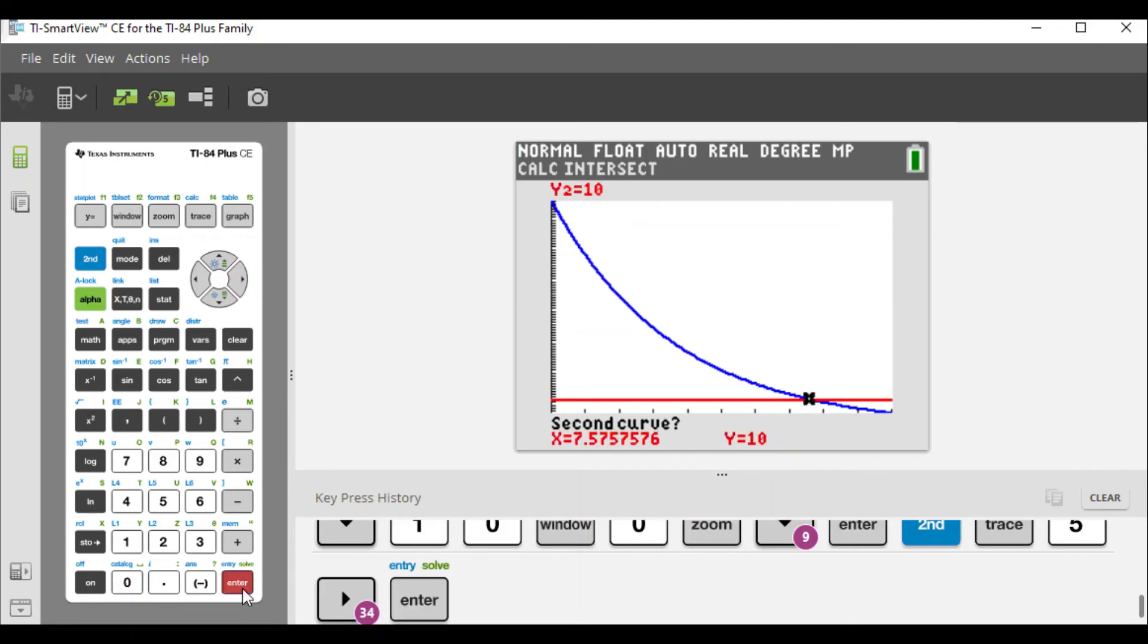Now we hit enter once, twice, one more time, and we see here the intersection is going to be 7.7549, which we round to the nearest hundredth to get 7.75. It looks like when x equals 7.75 hours, we're going to have a height of 10.